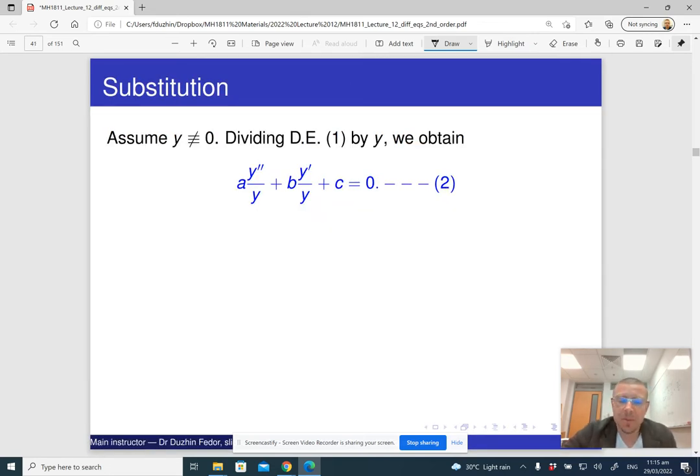Notice something interesting here. What is this y prime over y? This is nothing else but the derivative of logarithm of y. Because if you differentiate ln y, then first you differentiate ln of y, and its derivative is 1 over y, times the derivative of whatever is inside the ln, which is y prime. So y prime over y is in fact the derivative of the logarithm of y.